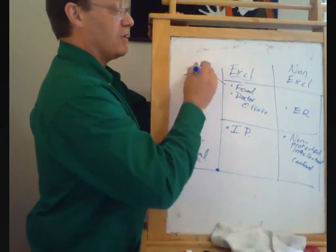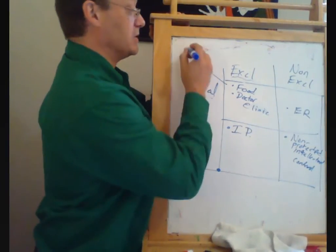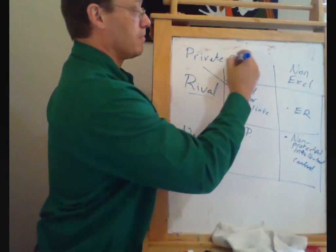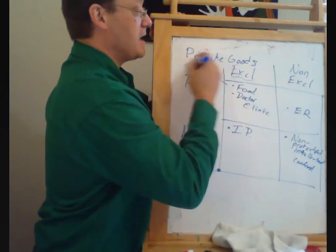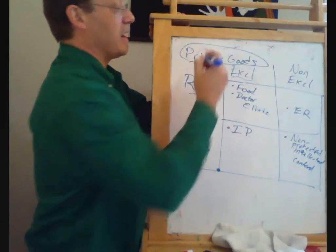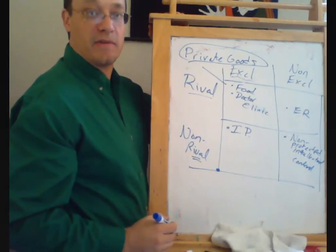This corner up here we call private goods. And everything we've done so far in economics, we've been mainly thinking about private goods.